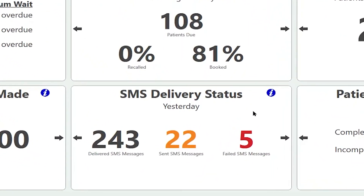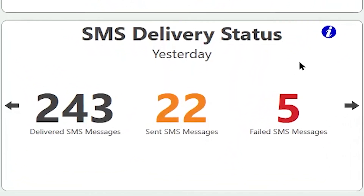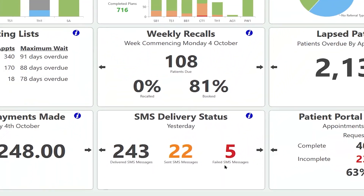The SMS delivery status tile gives us information on the SMS sent in a specific time frame — in this case it's yesterday. We've got 243 delivered messages, which means the phone number has definitely received that text message. The sent SMS messages are still waiting to find out whether or not the text has been received — it's highly likely it has. The failed messages are where the SMS has failed to send, which is important because it might indicate an invalid phone number that we can update when the patient next comes to the practice.